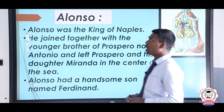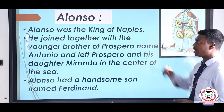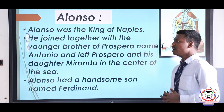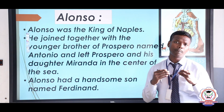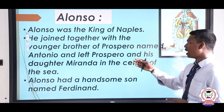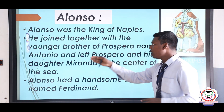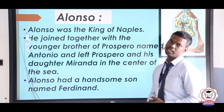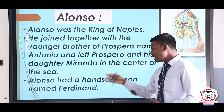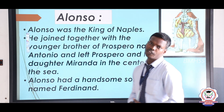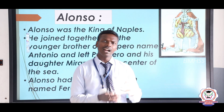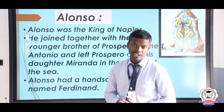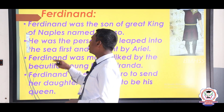Alonso was the King of Naples. He joined together with the younger brother of Prospero, Antonio, and they plotted against Prospero. As a result, Antonio had left Prospero and his daughter Miranda in the center of the sea. Alonso had a handsome son named Ferdinand. Miranda was a beautiful young lady and Ferdinand would come to be very significant to her.